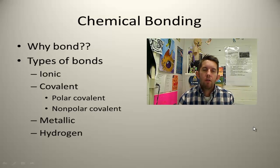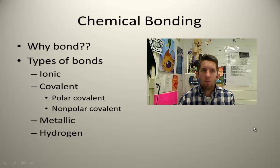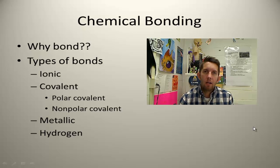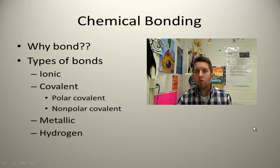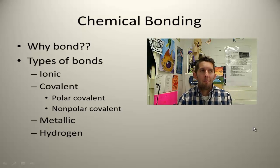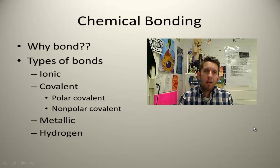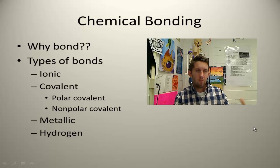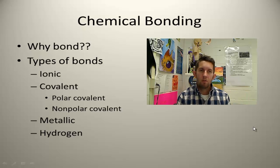In this screencast, I want to briefly review the different kinds of chemical bonds we talked about in class. First off, why bond? Why do chemicals bond to begin with? Why not stay singular? The whole idea behind chemical bonding is to find stability. Chemicals bond in order to become more stable, in terms of potential energy.